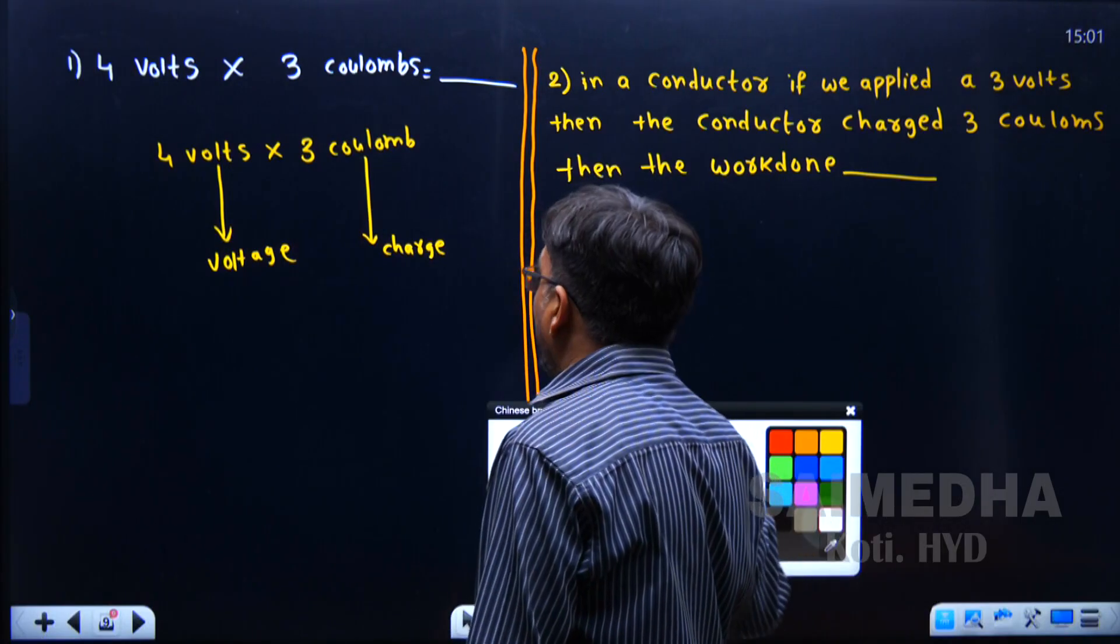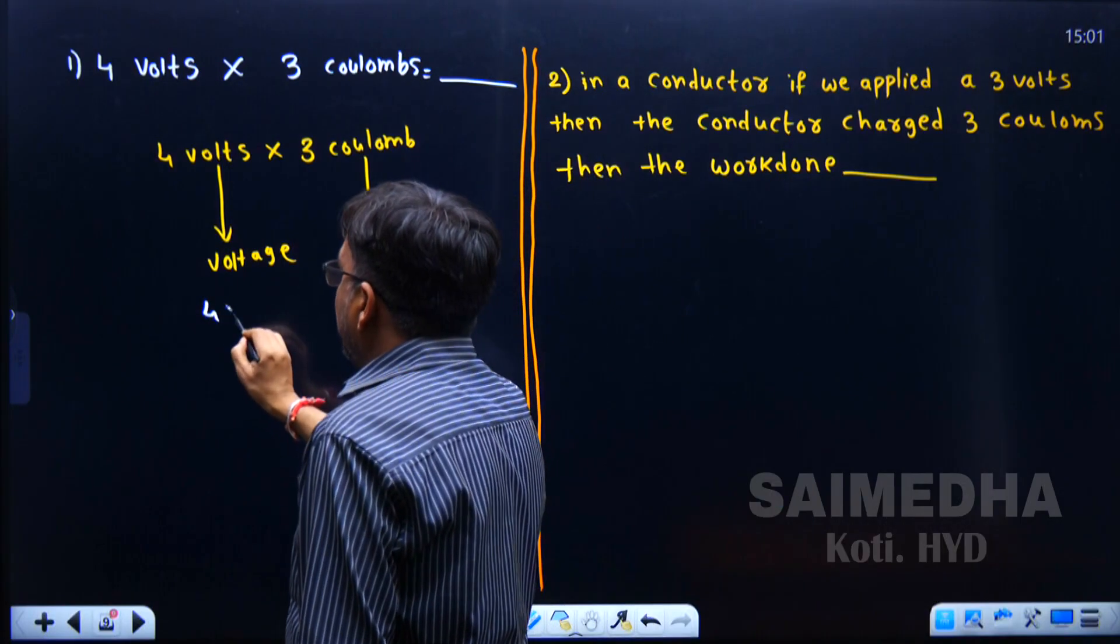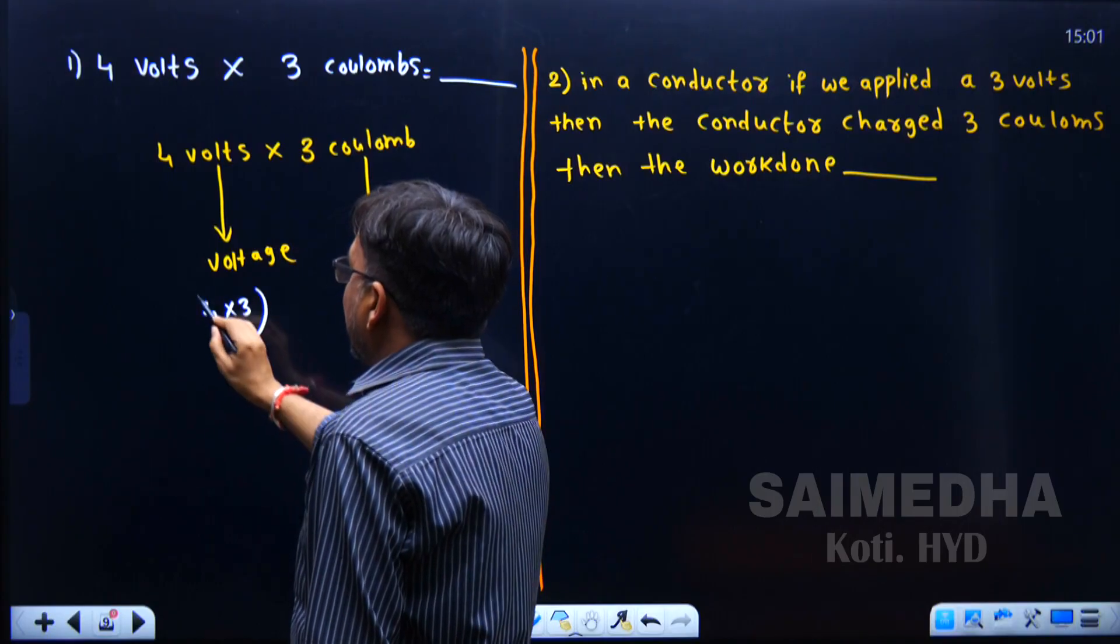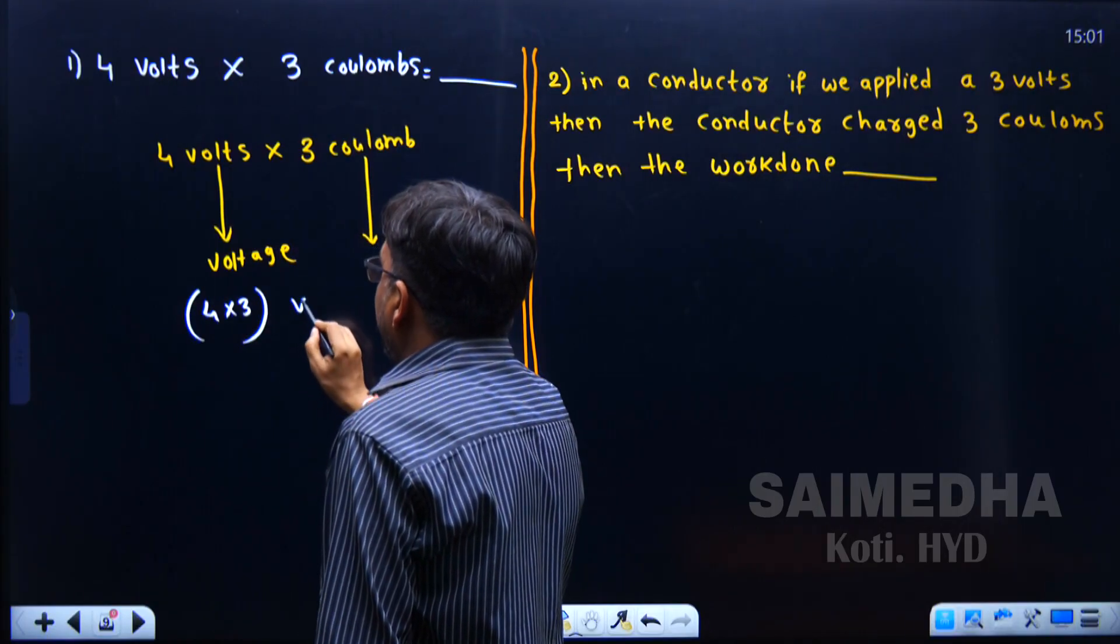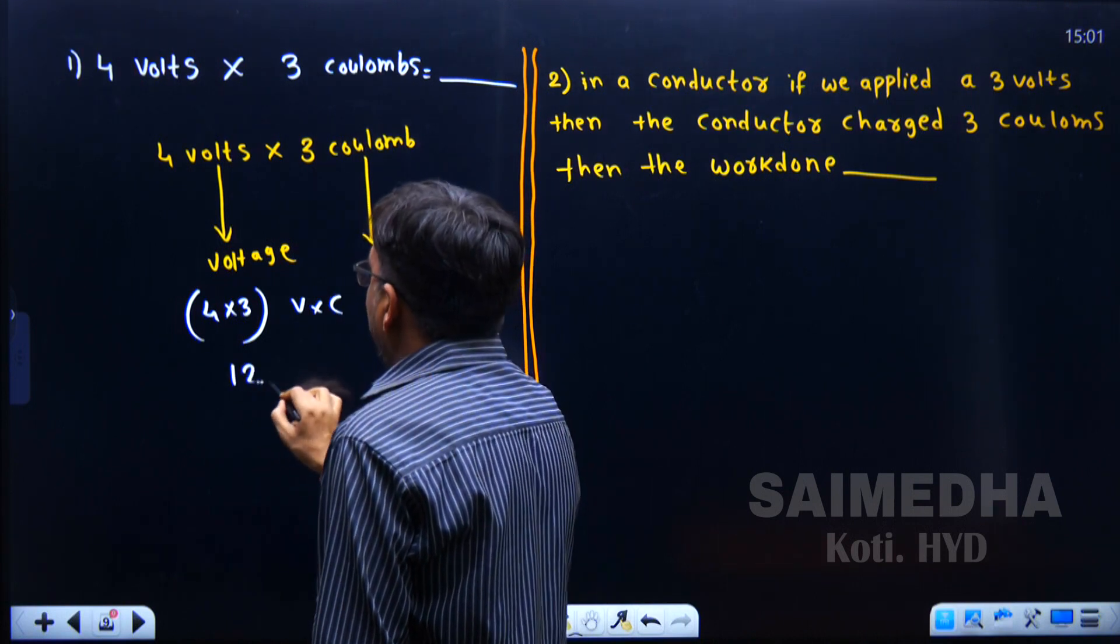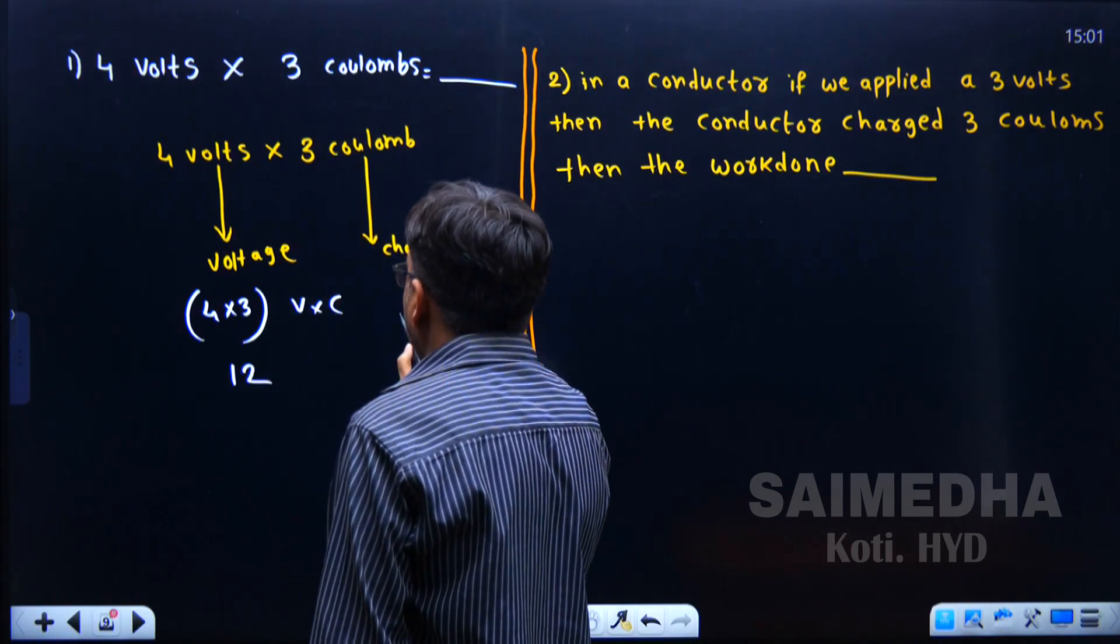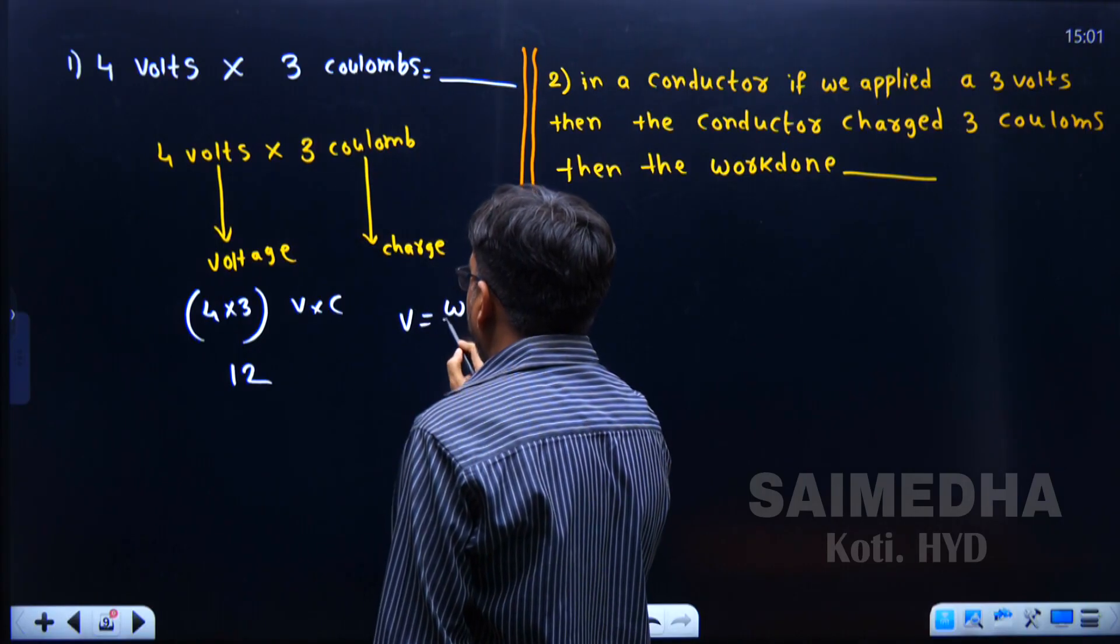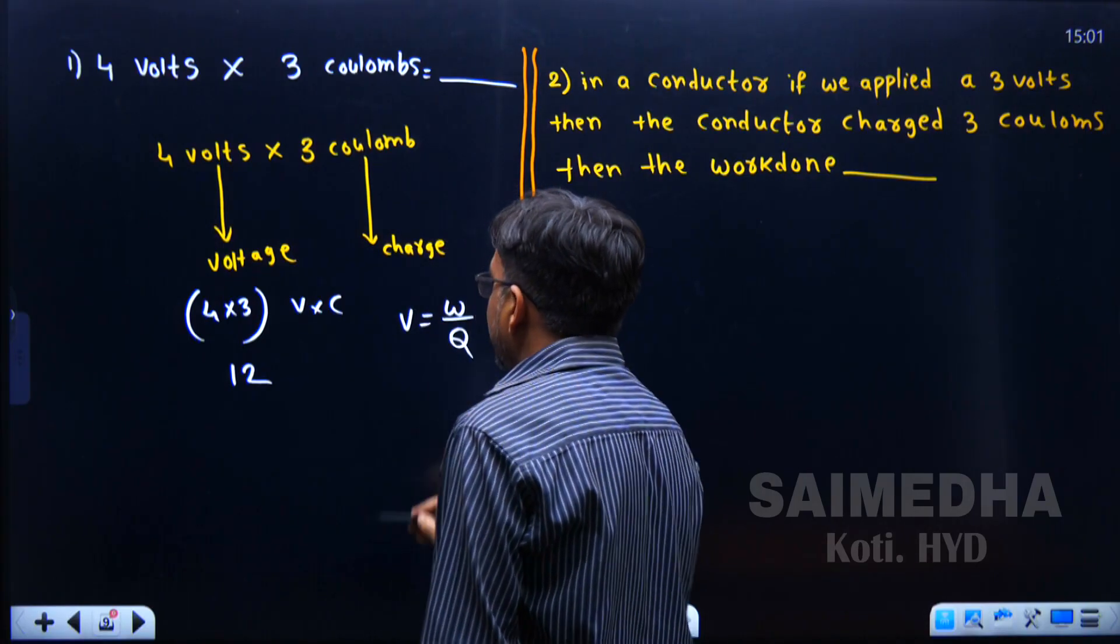Now, 4 into 3, how much? I am writing voltage into coulombs. Voltage into coulombs means from definition voltage V equals work done by charge.